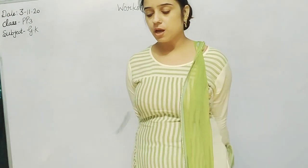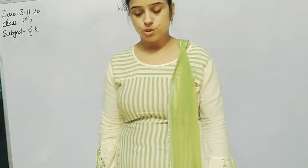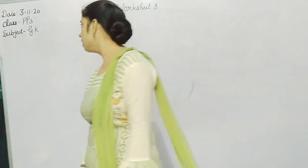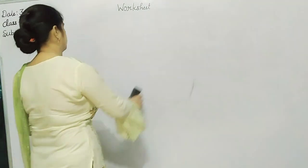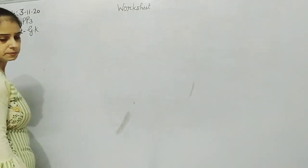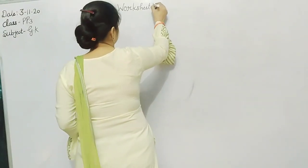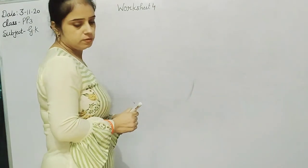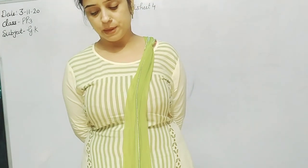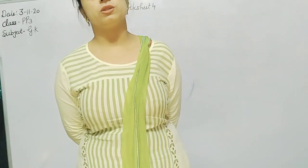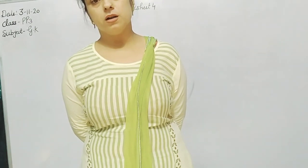तो ये होगी आपकी Worksheet Number 3 जो आपने learn करनी है। एक आपकी Worksheet आती है 4। हमारा है first: What is the color of apple? Apple का color कौन सा होता है? Red. What is the color of apple? Red.